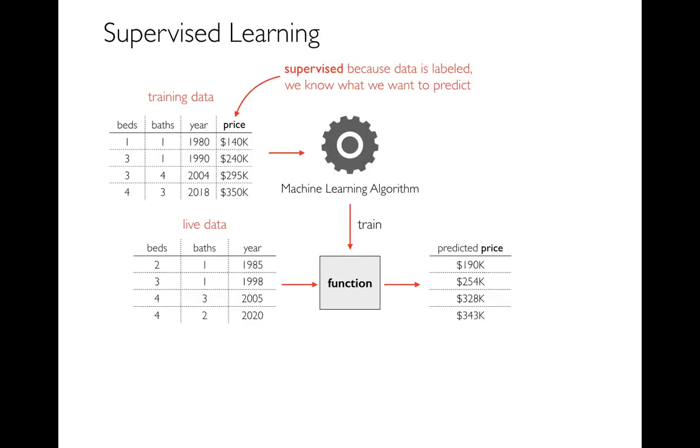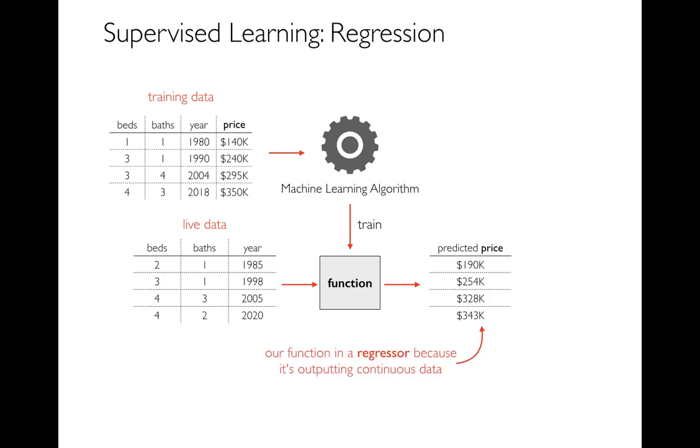So going back to this example we had before of the houses, this is a case where we do have labeled data. The label is the price. That's what we want to predict. And since we have that information, this is a supervised learning problem. How can we, given all of this known data about price and house attributes, figure out what that relationship is?